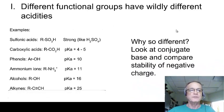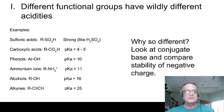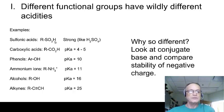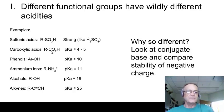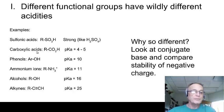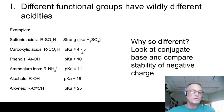Different functional groups have wildly different acidities. Sulfonic acids are very strong acids — among the various types of organic acids, they are roughly the same strength as sulfuric acid, which makes sense because they have essentially a sulfuric acid piece on the end of a carbon group. Then there are carboxylic acids, which are among the strongest. The reason they have the word acid in their name is because that's one of their most important properties. However, the pKa is 4 to 5, which means it's still a weak acid — much stronger than the rest, but still a weak acid.